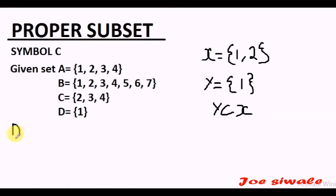So coming to the example, given set A equals {1, 2, 3, 4}, set B equals {1, 2, 3, 4, 5, 6, 7}, set C equals {2, 3, 4}, and set D equals {1}.